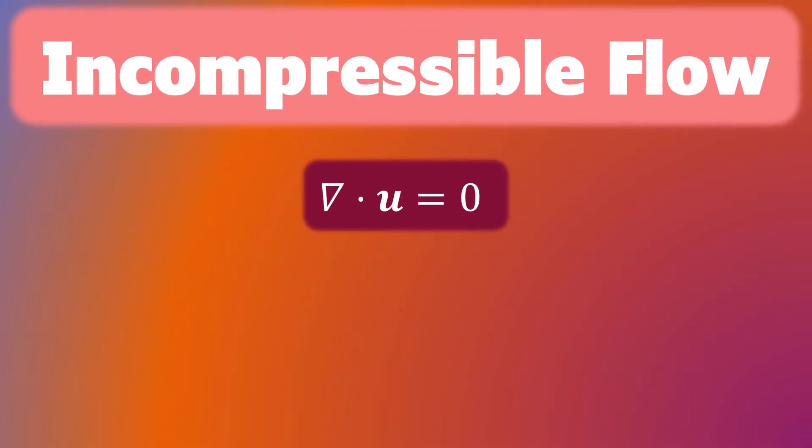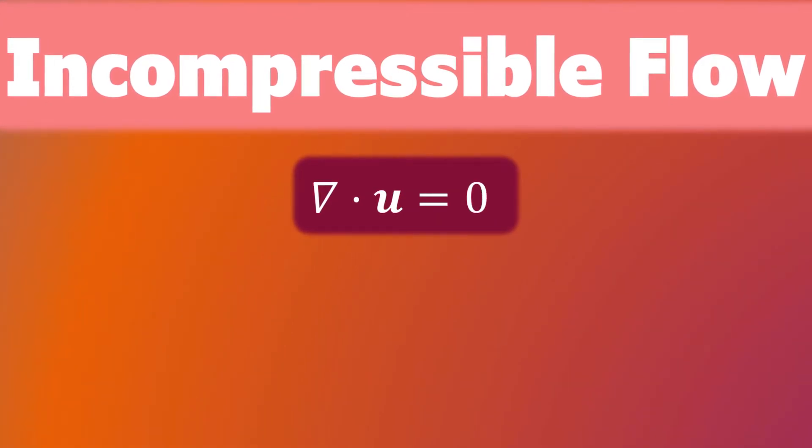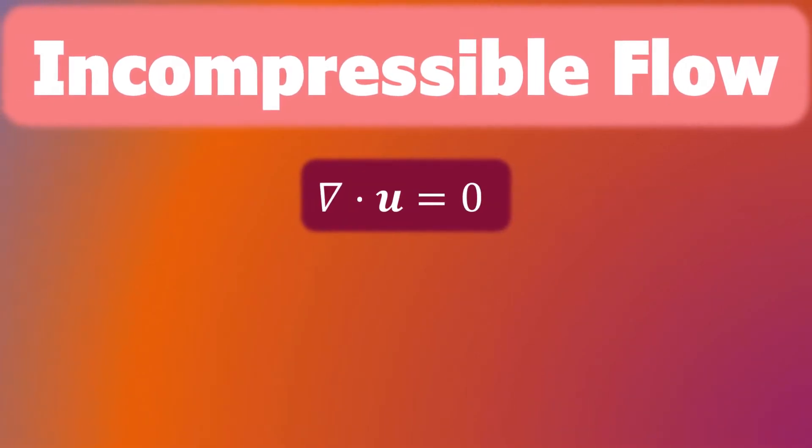Next, we say a flow with velocity U is incompressible if the divergence of U is zero.